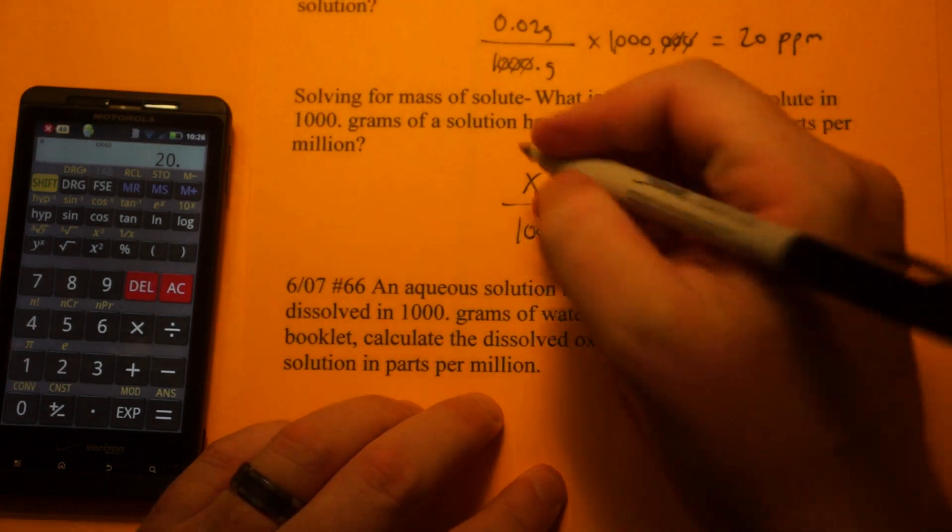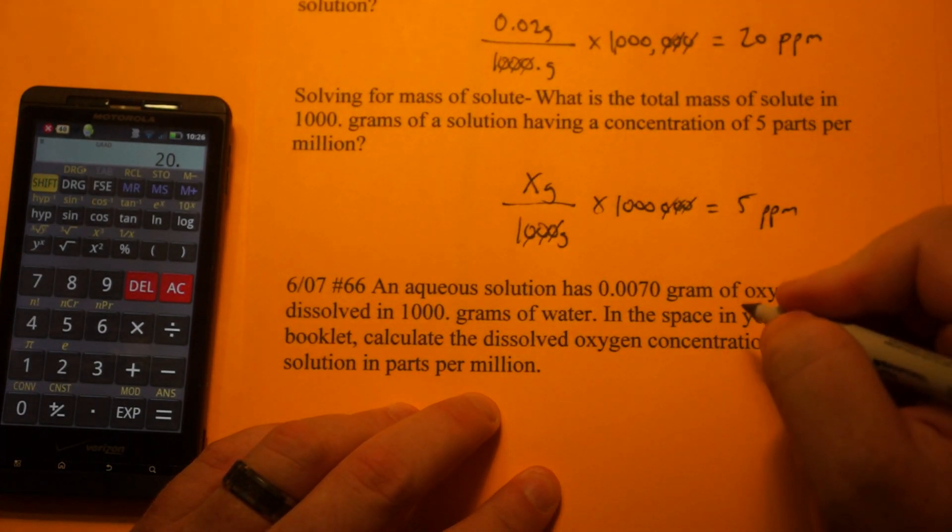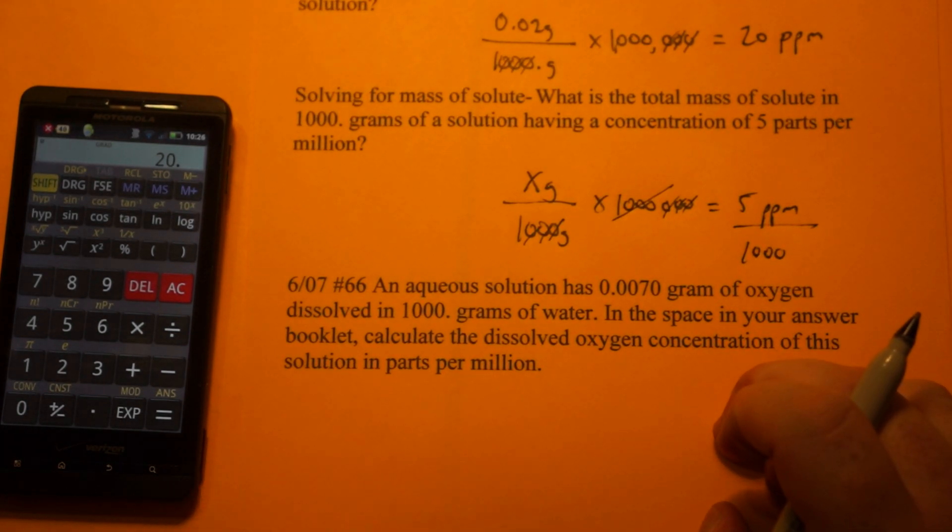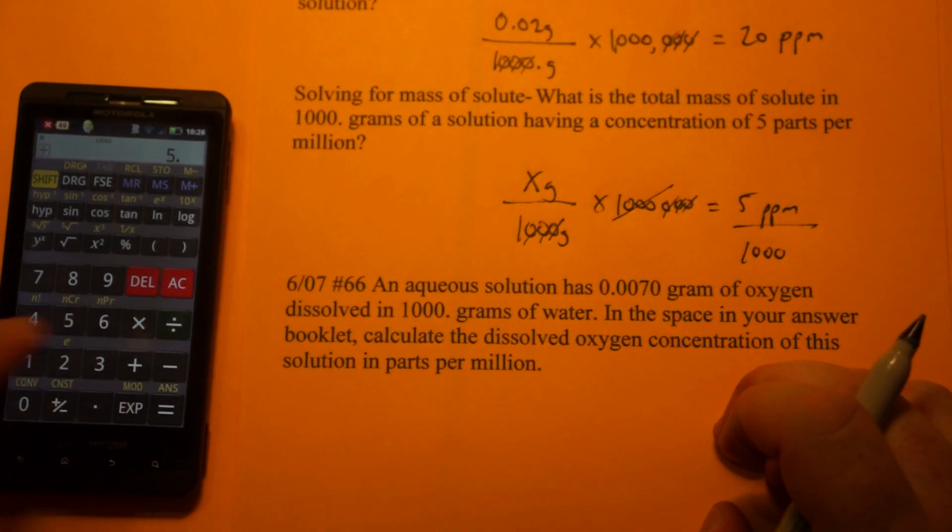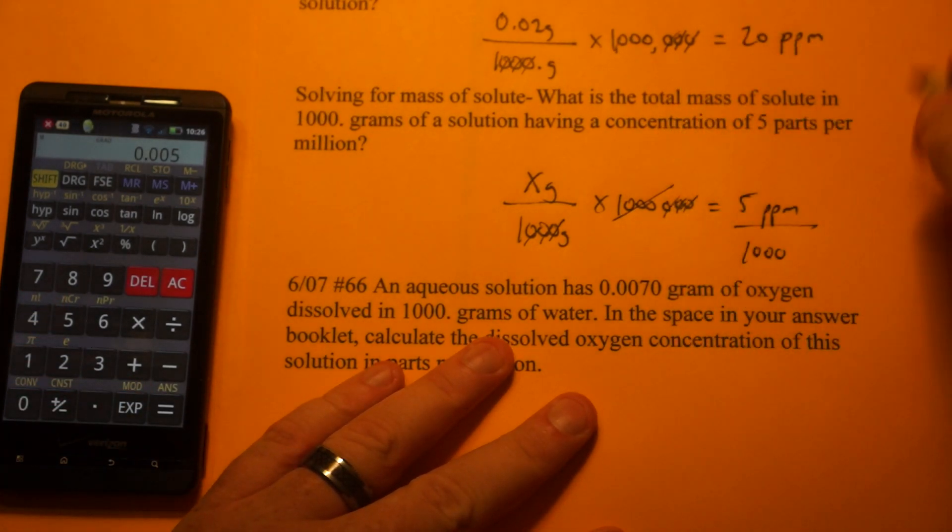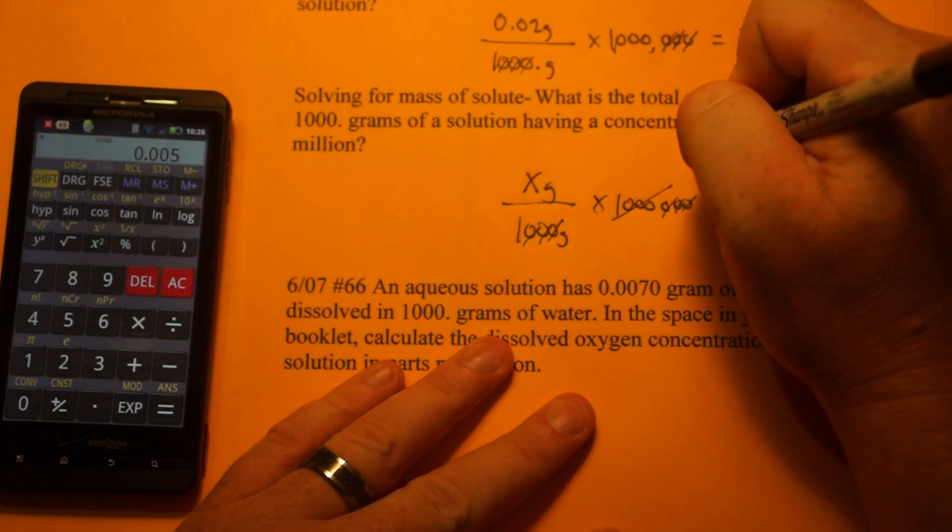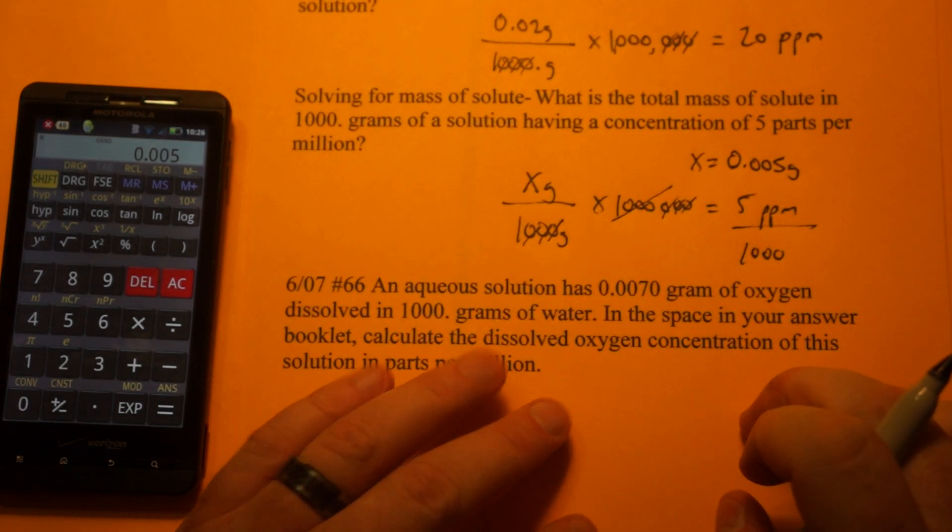So again, we knock out the 3 zeros, 1, 2, 3, and we're going to take the 1,000 and divide 5 PPMs by 1,000. 5 divided by 1,000 equals 0.005 grams. And that's your mass of solute.